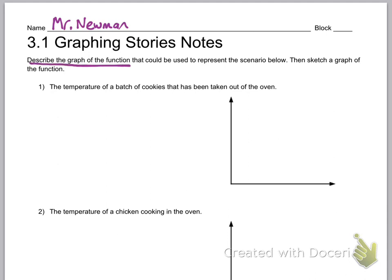First thing we're going to do is we're going to describe the graph, and then we're actually going to sketch it. So notice this is the temperature of a batch of cookies that's been taken out of the oven, and this is going to happen over time. So I'm going to put time on the x-axis. Anytime time is one of the variables, it's always going to be on the x-axis, because it's the input, and the temperature is going to be the output.